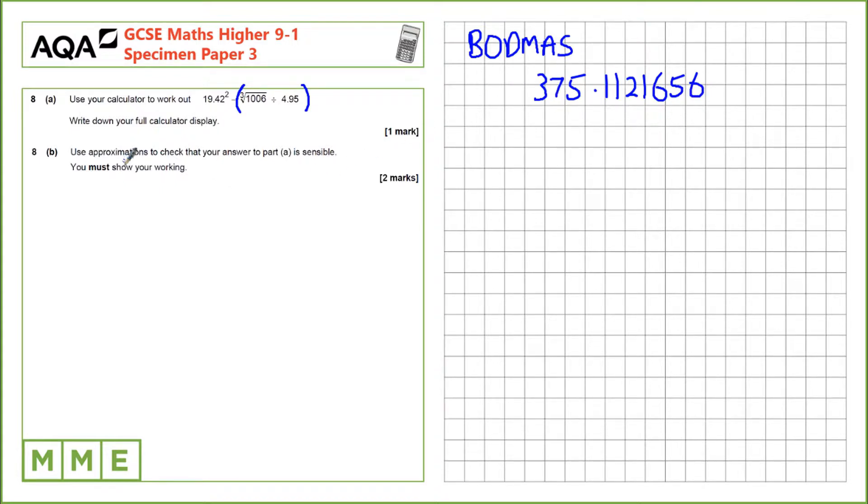For part B, we can use approximations to make sure this is a reasonable answer. So for example, instead of 19.42, let's use something we can square, so 20. And the same for the other ones. 1006, let's call that 1000. And 4.95, let's call that 5.